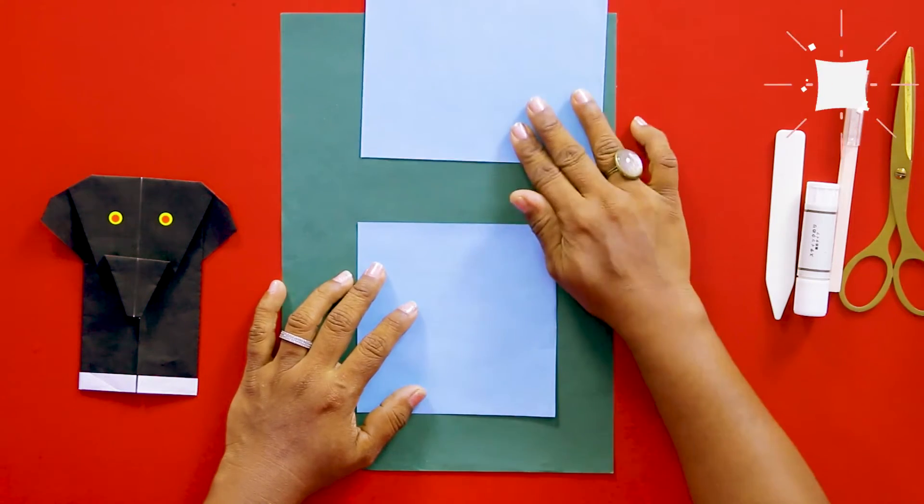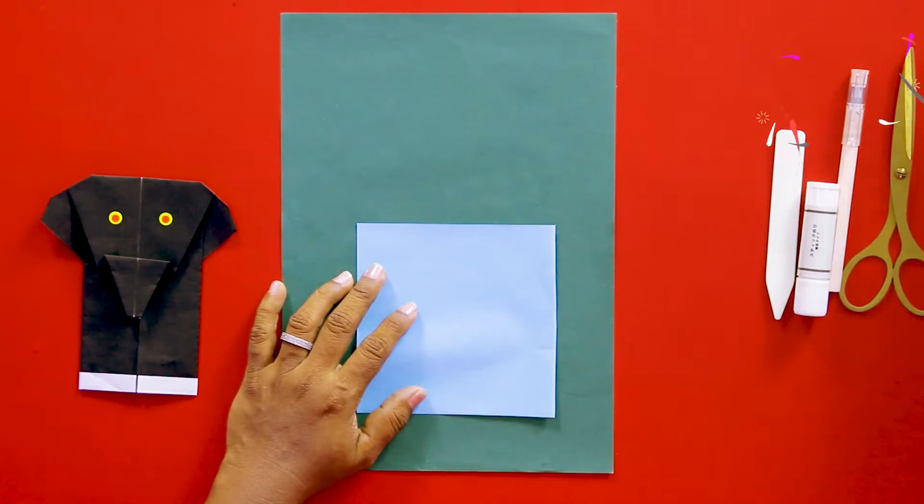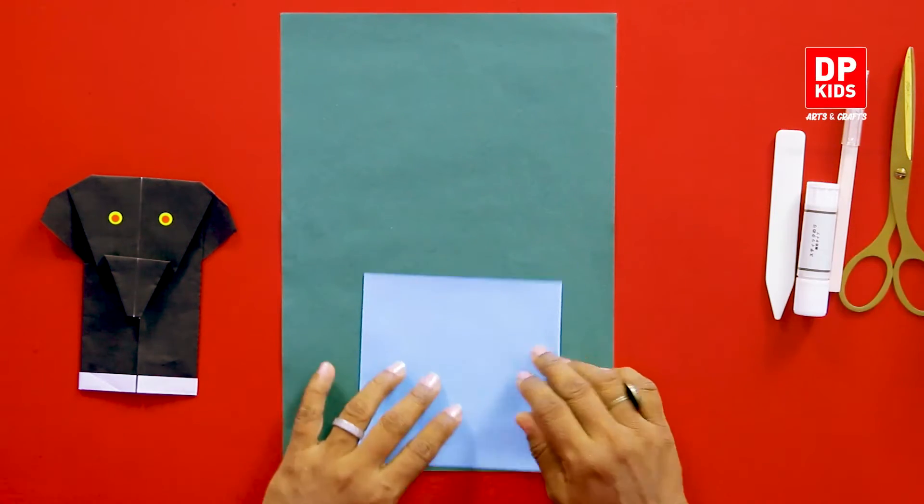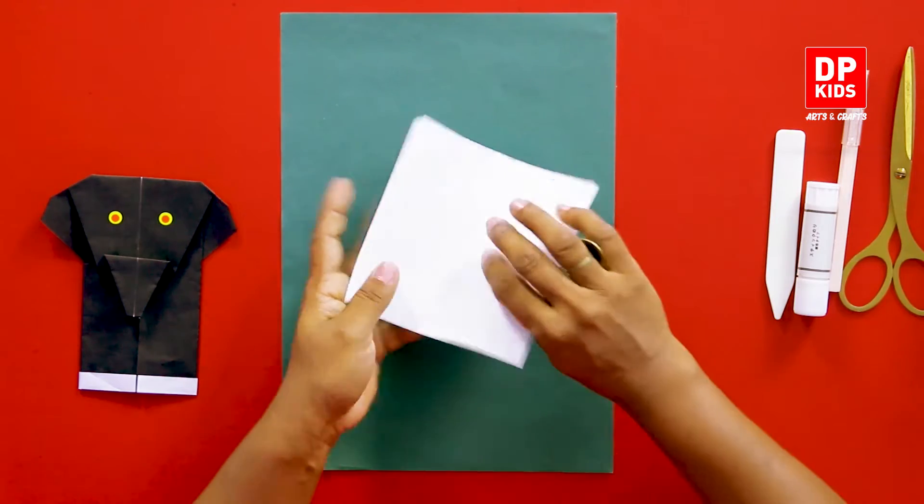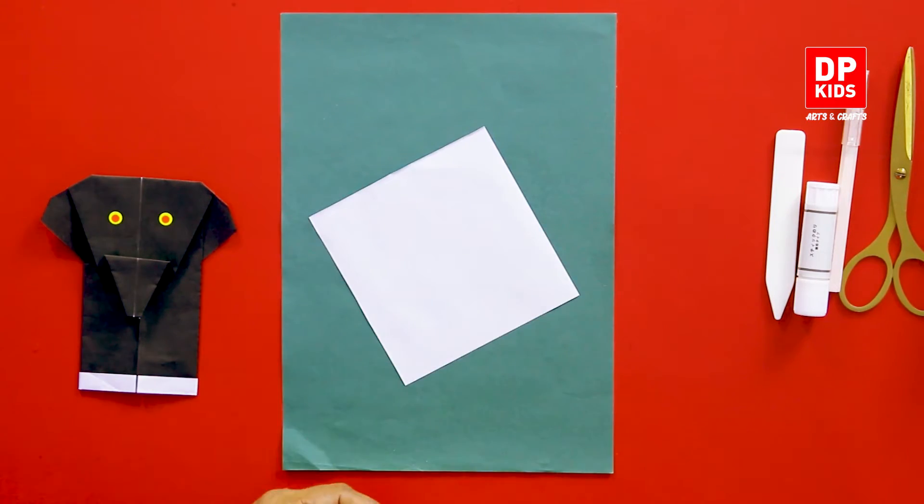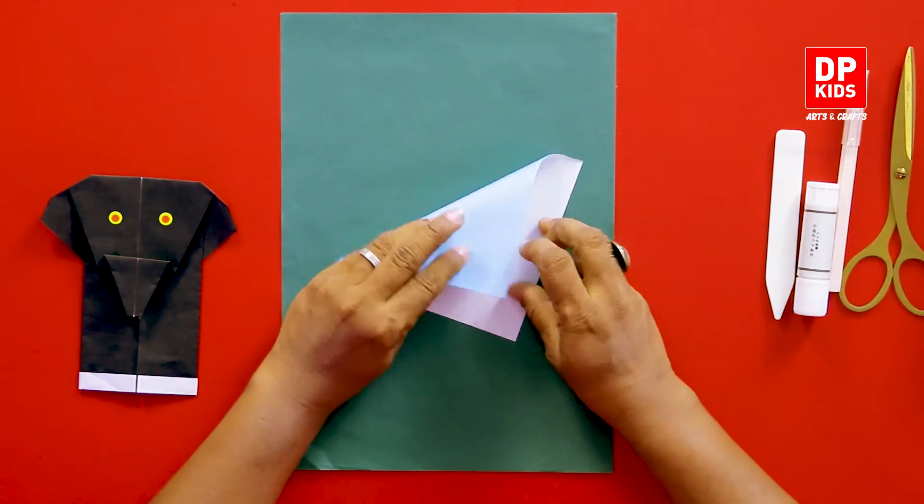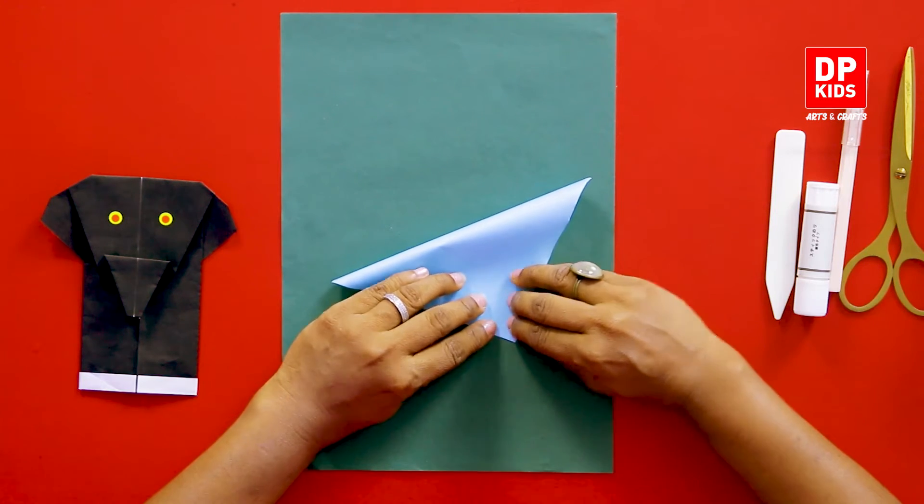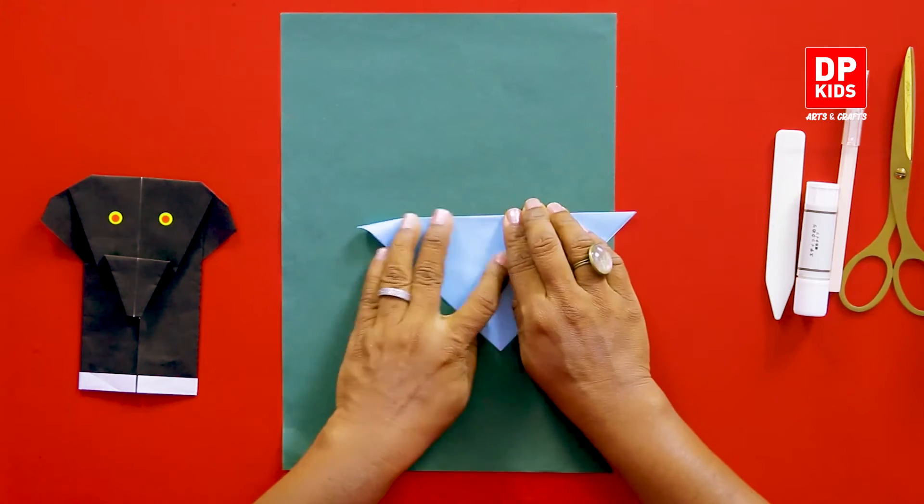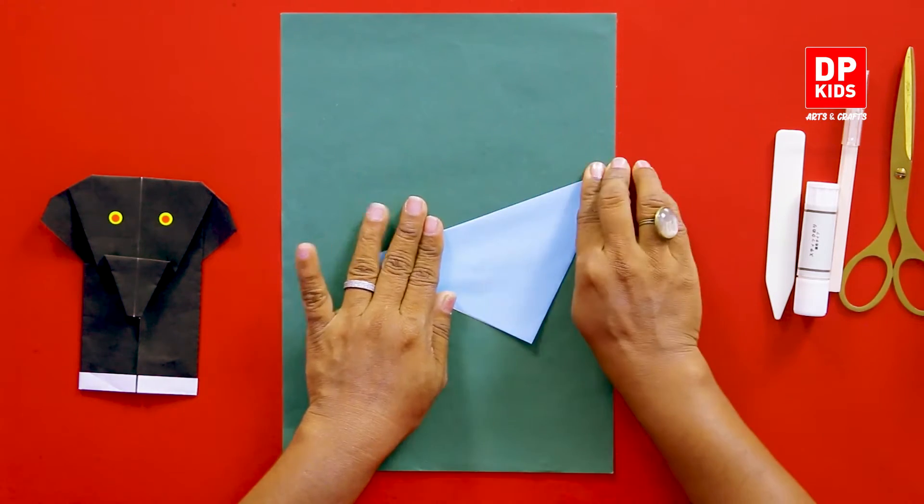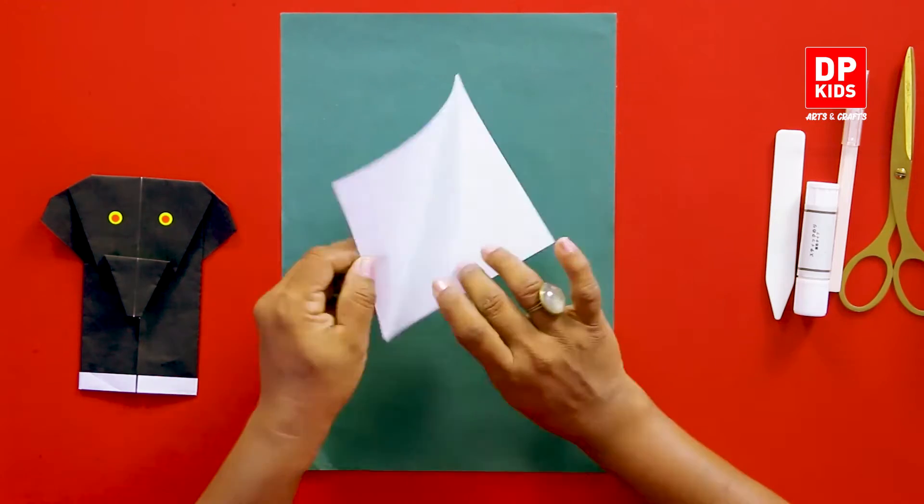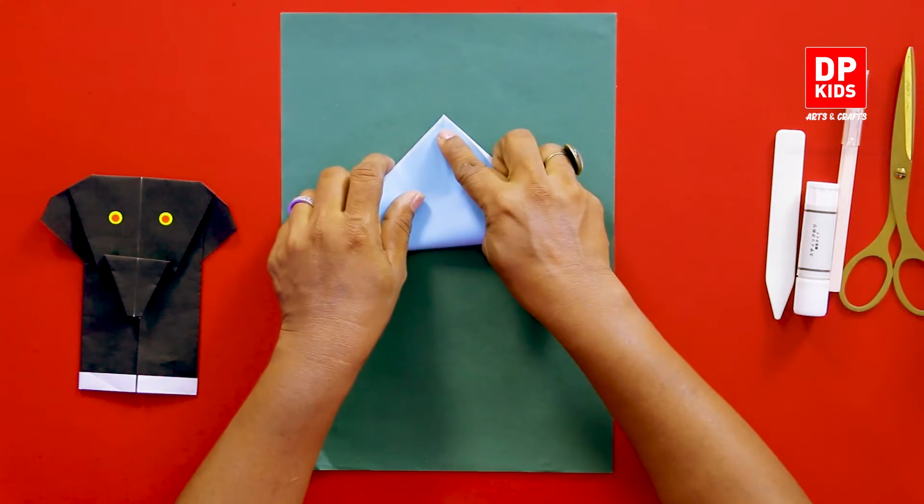Let's make the head now. Turn it around like this, then fold it in half. See, you got a triangular shape and do the same thing on the other side.